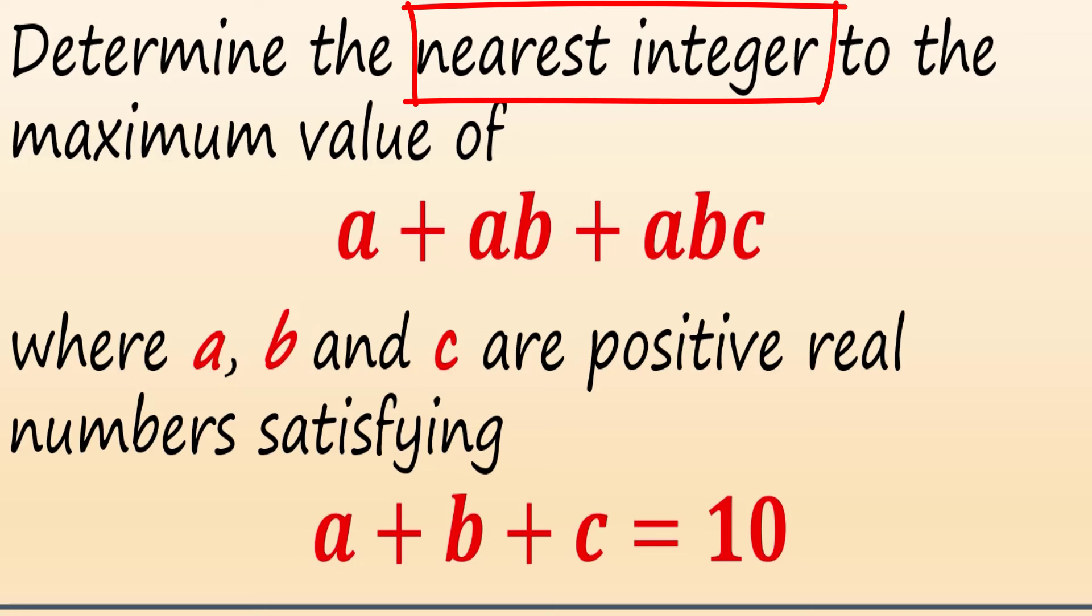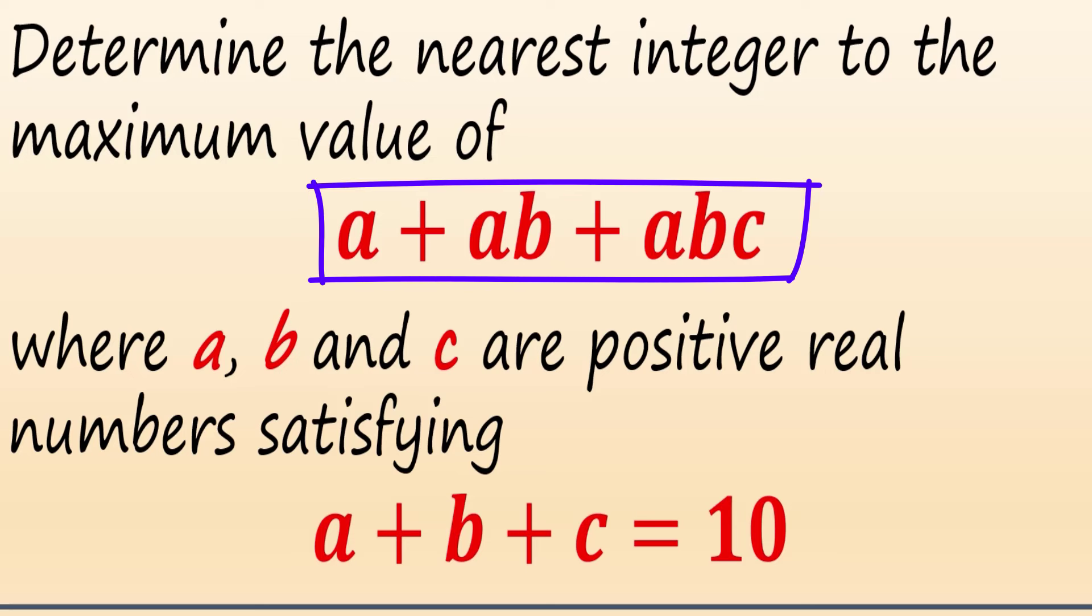Determine the nearest integer to the maximum value of a plus ab plus abc, where a, b, and c are positive real numbers satisfying a plus b plus c equals 10.